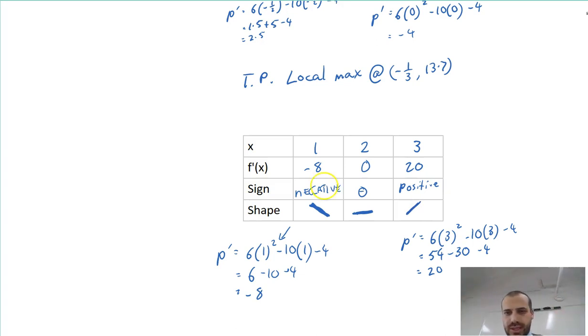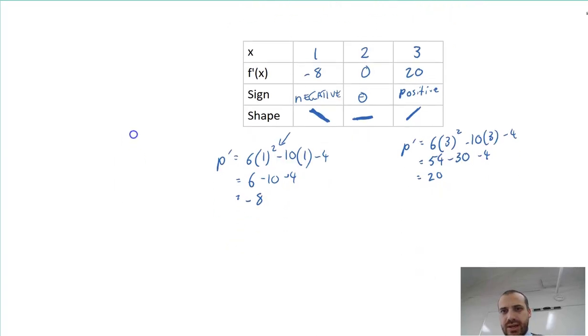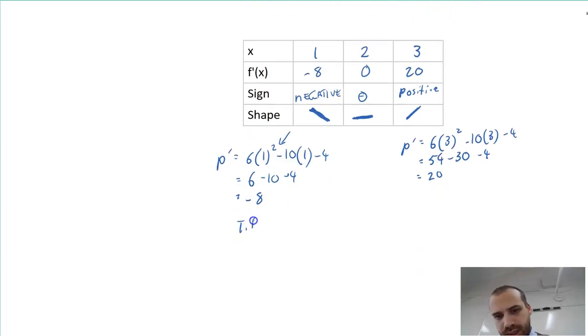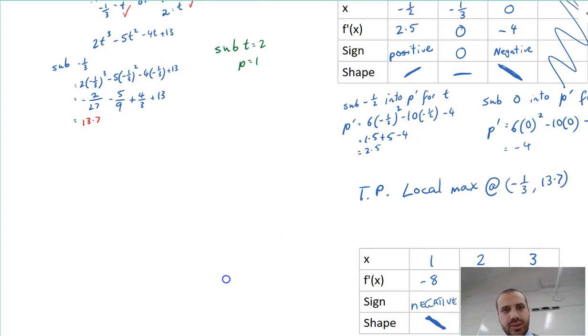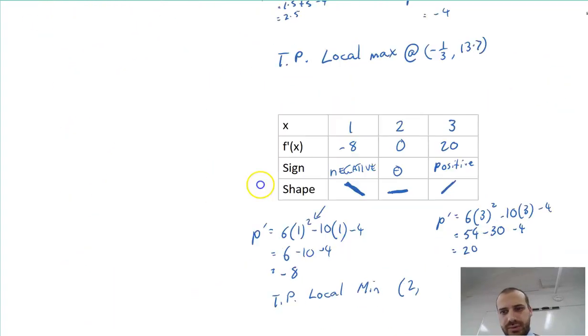We're done. We can see that it starts by going downhill, it flattens out, it starts going uphill. We can say that the turning point is a local minimum at 2, 1.